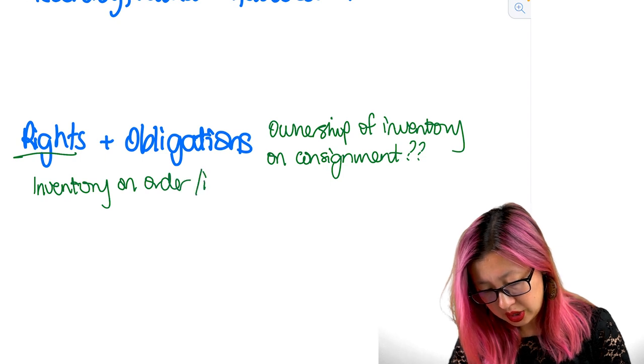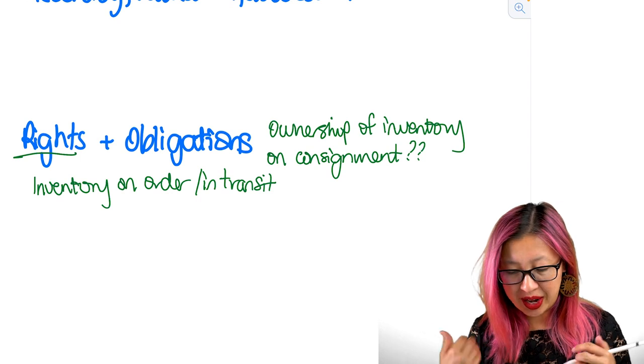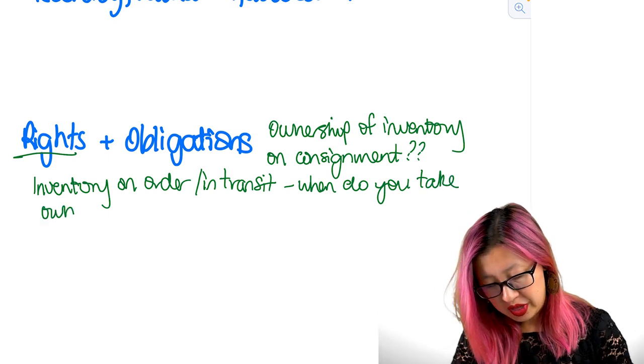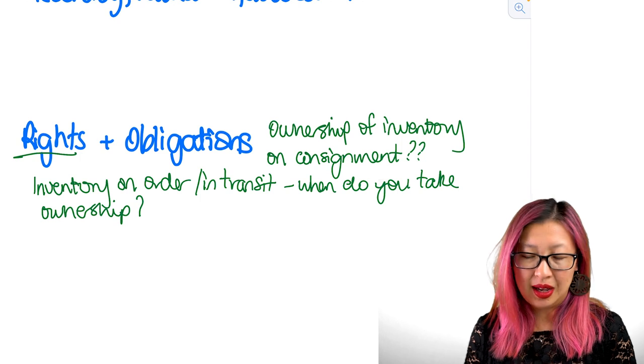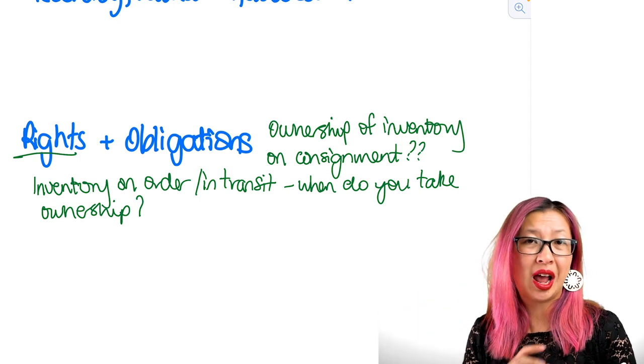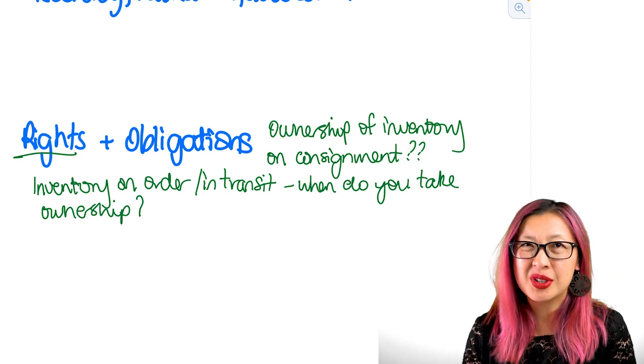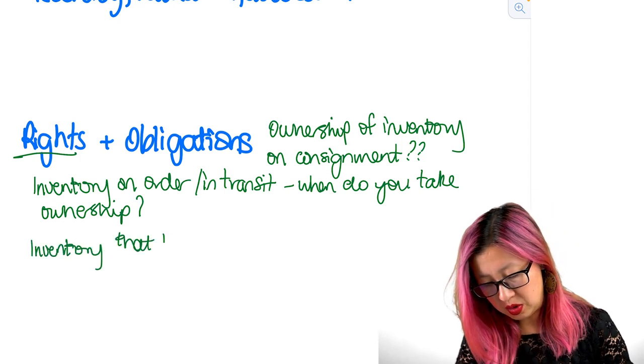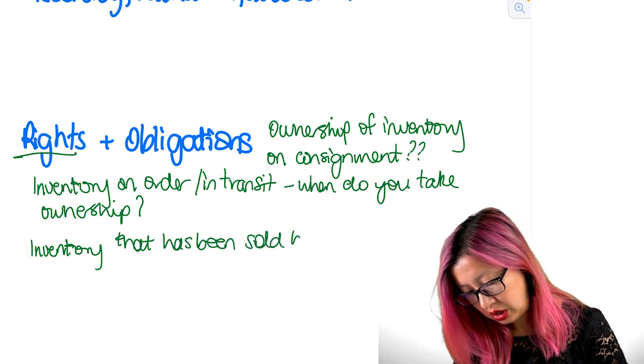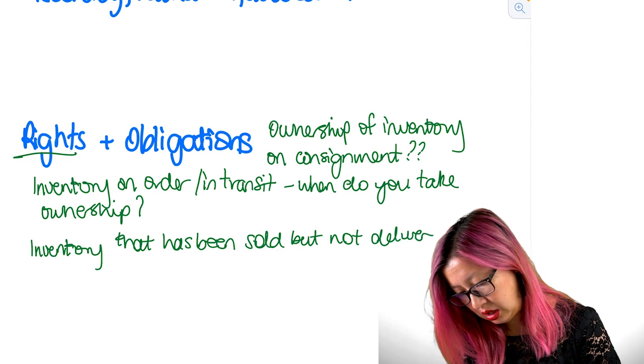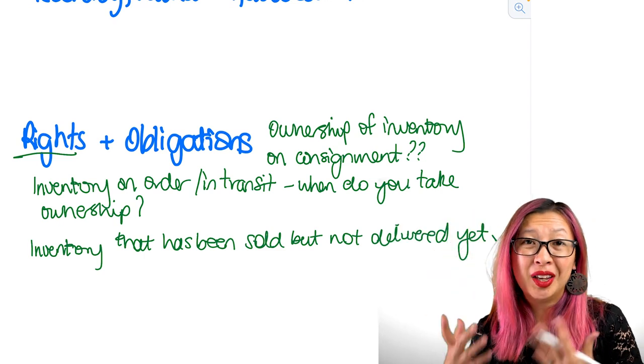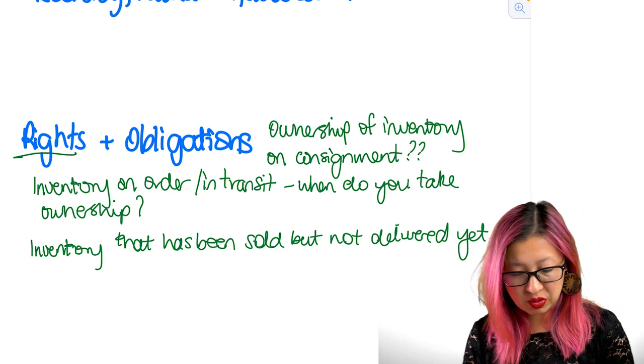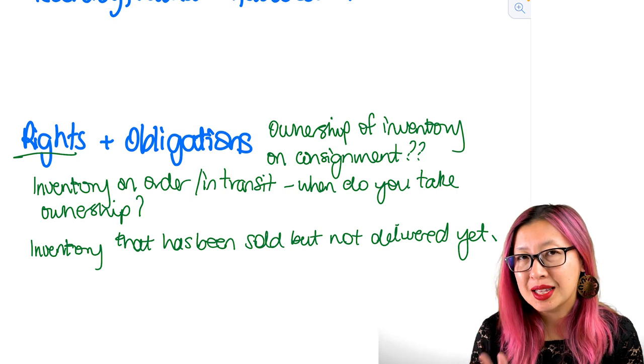The other thing around rights and obligations is inventory on order or inventory in transit. So when inventory you've ordered it, it's on the truck on the way to you, the question is when do you take ownership? So that might mean that you'll need to record inventory that you physically don't have on premises if you own it as soon as it gets on the truck. The other issue is inventory that has been sold but not delivered yet. So sold on the last day of the year we know that the sale doesn't happen until the inventory is delivered to them but we want to make sure that we still own that inventory until that point so we need to make sure it's recorded. So that's our rights and obligations. We don't have too much in the obligation side it's more on the right side.